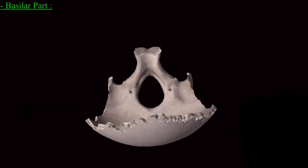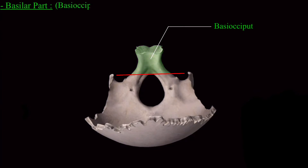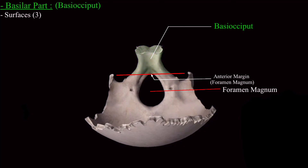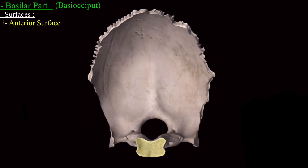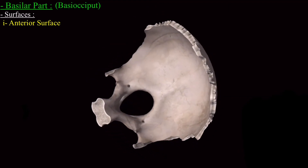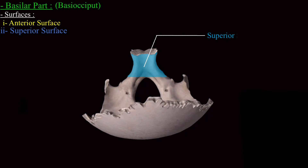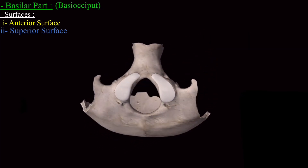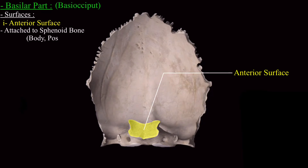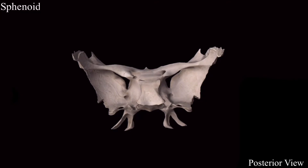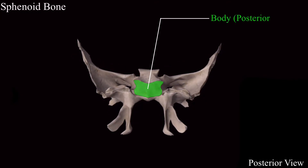Next is the basilar part of the occipital bone, also called the basi-occipital bone. It extends from the anterior margin of the foramen magnum and has three surfaces and two lateral borders. The anterior surface is attached to the posterior surface of the body of the sphenoid bone. The superior surface is slopey and forms the posterior part of the clivus — anteriorly contributed by the sphenoid and posteriorly by the basilar part of the occipital bone.